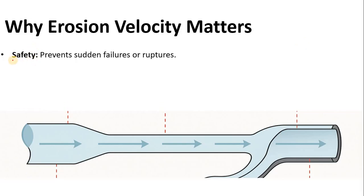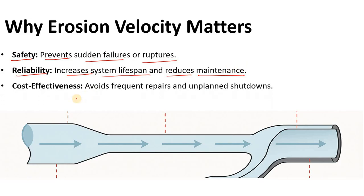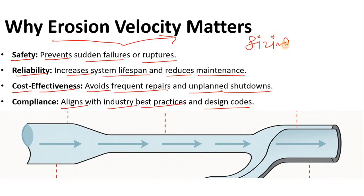Now let's see why erosional velocity matters. First and most important is safety — it helps prevent sudden failures and ruptures. Second is reliability — it increases system lifespan and reduces maintenance if you keep your velocity within range, below the erosional velocity. Third is cost effectiveness — it avoids frequent repairs and unplanned shutdowns due to vibrations, leakage, or pipe rupture. Fourth is compliance — it aligns with industry best practices, good engineering practice, and design codes.